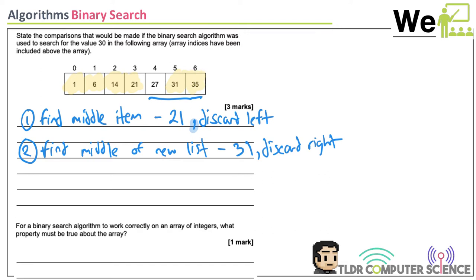Leaving you with 27. 30 is higher than 27, so we check what's left. Nothing. Item not present. In all honesty, you could get all three marks just by writing 21, 31, 27 — those are the three comparisons made.